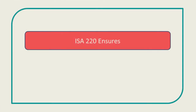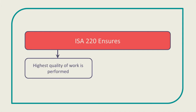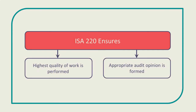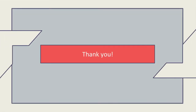Each of these six components is explained in ISA 220 to enable audit firms to ensure the highest quality of work is performed. This therefore ensures that an appropriate audit opinion is formed on the financial statements for every client. I hope you found this video useful. Thank you and good luck.